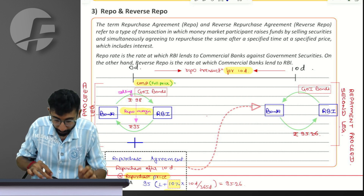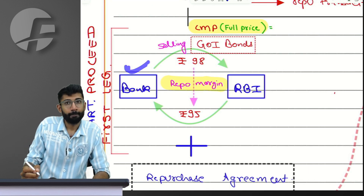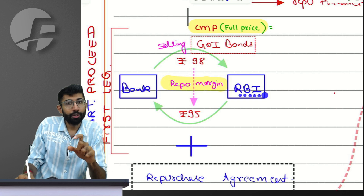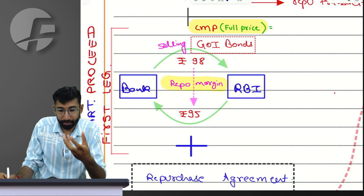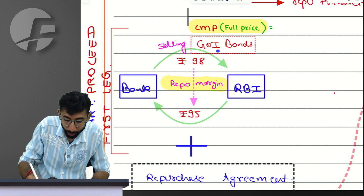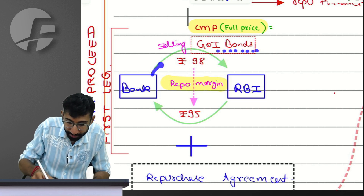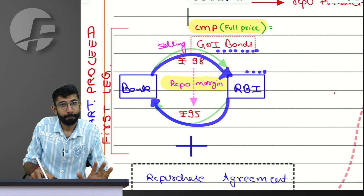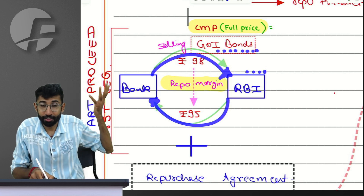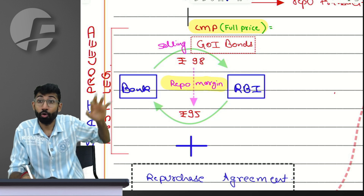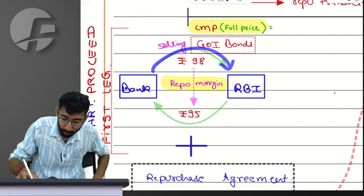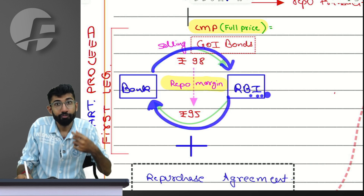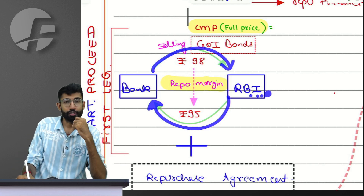Let me tell you the scenario. Suppose there is this bank who is in need of money. This bank will go to RBI and ask: I have certain Government of India bonds with me. Can I sell these securities to you, and against that security, can you lend me an amount? Being a bank, I have certain long-term securities available. I want to sell those and receive an amount from RBI for a short-term period because I need to borrow short term.